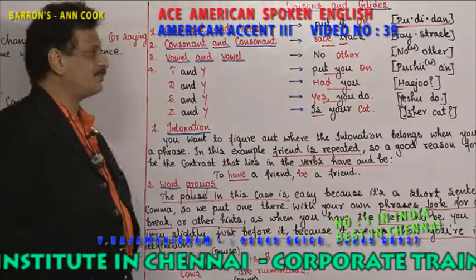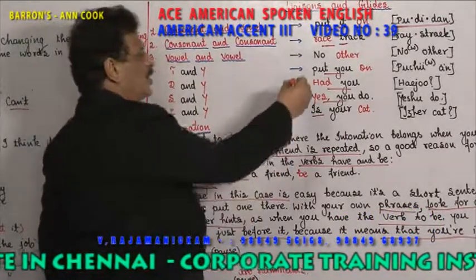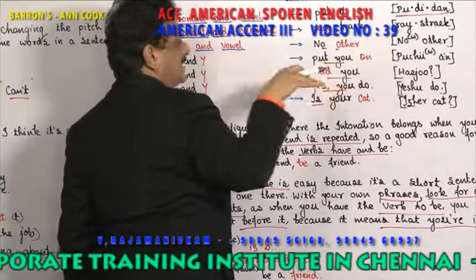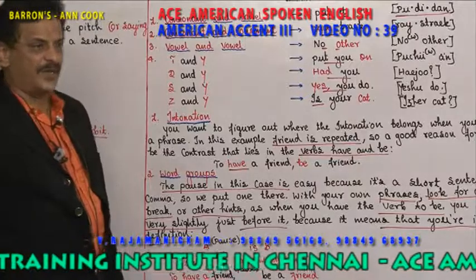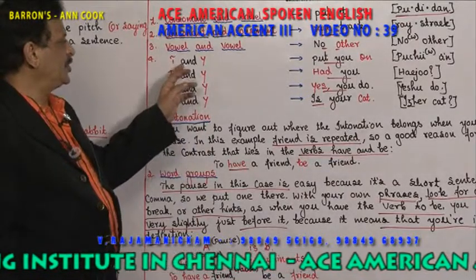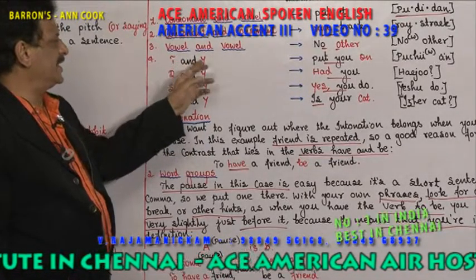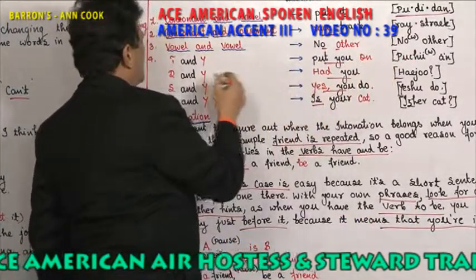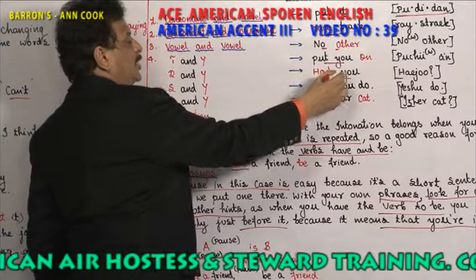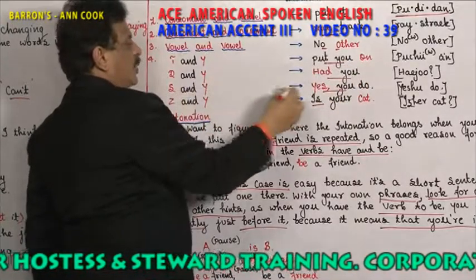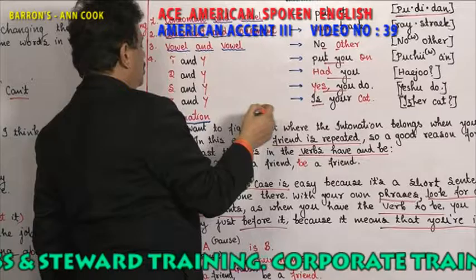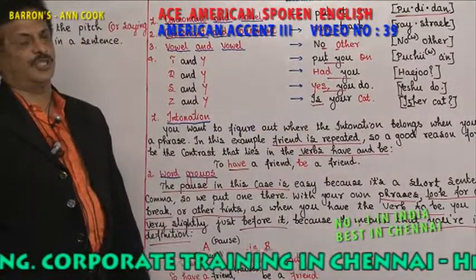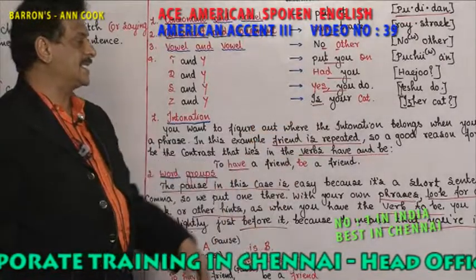Vowel and vowel: a word ends with O and the next starts with O — 'no other' — it glides with W, 'no-w-other.' T plus Y becomes 'ch' sound — 'put you on' becomes 'put-chu-on.' D plus Y becomes 'j' sound — 'had you' becomes 'had-ju.' S plus Y — 'as you do.' Z plus Y — I plus Y. Vowels A, I, O, U plus S becomes Z — 'is your cat.'